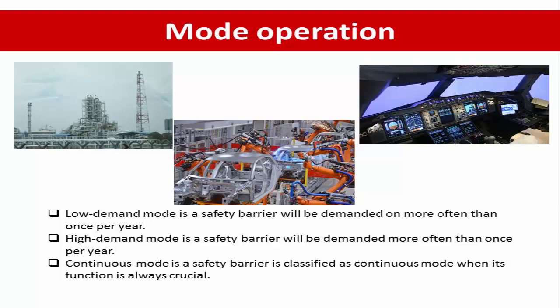The last mode is continuous mode. A safety barrier is classified as continuous mode when its function is always crucial. In this case, the safety barrier is integrated with the control system, and an undesirable outcome will occur when the safety barrier fails. Examples include the fly-by-wire system for flight control of an aircraft, and the dynamic positioning system for ships and offshore platforms.